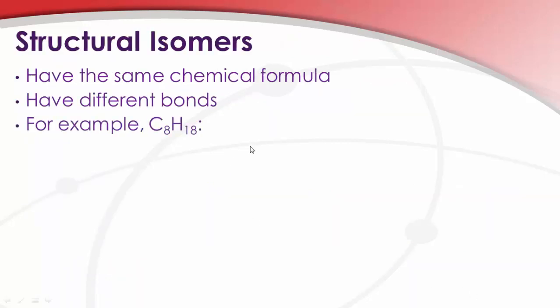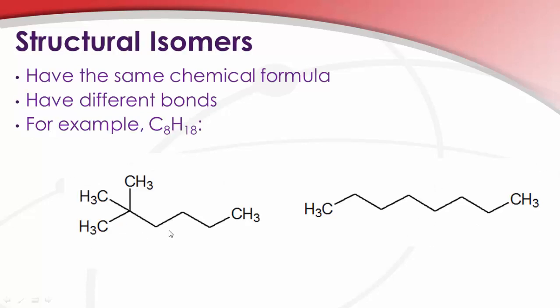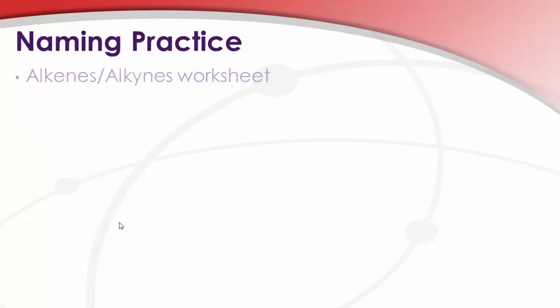Structural isomers then have the same chemical formula, different bonds. For example, C8H18, as shown here, but also here. So these both have the same formula, C8H18, but they have different structures. And these are fundamentally different structures. In order to change this molecule into this one, you would have to break several bonds and reform them.